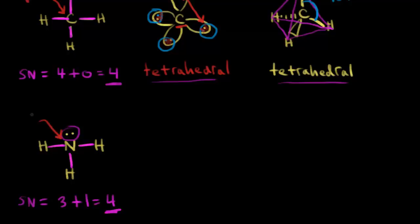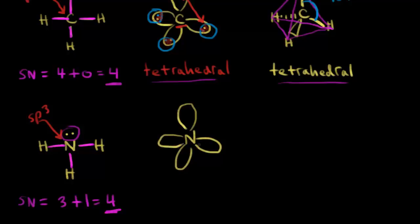sp3 hybridization gives us four hybrid orbitals, so we draw those four hybrid orbitals for nitrogen — one, two, three, and four. For nitrogen's electrons, this orbital gets one, another gets one, another gets one, and this one gets two. Then we put in the hydrogens, each with one electron in an unhybridized s orbital. The overlap gives us three sigma bonds in ammonia, plus a lone pair.